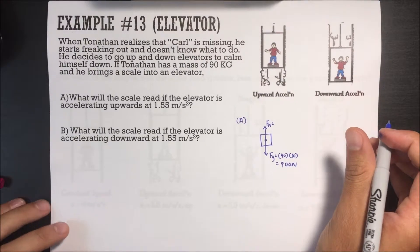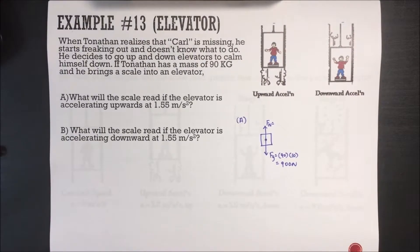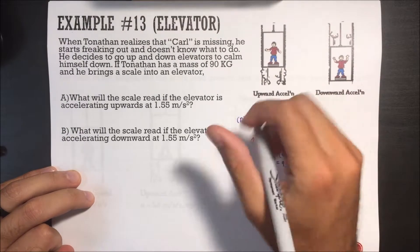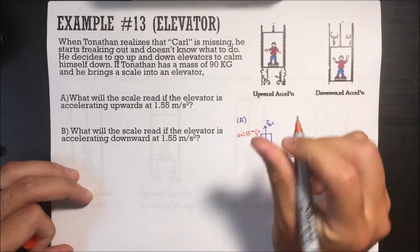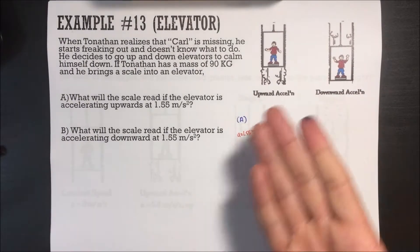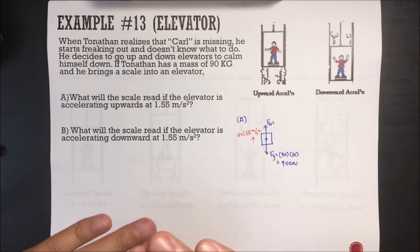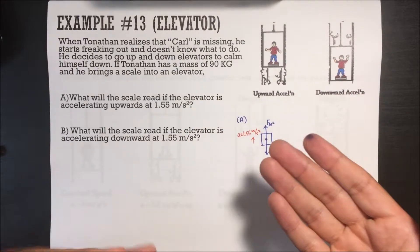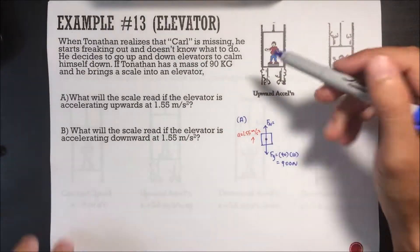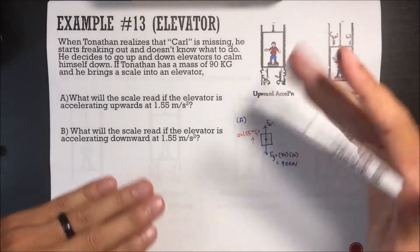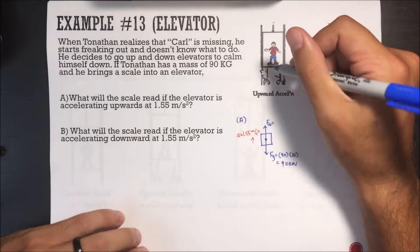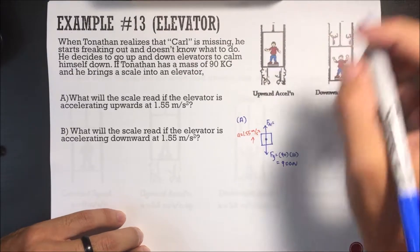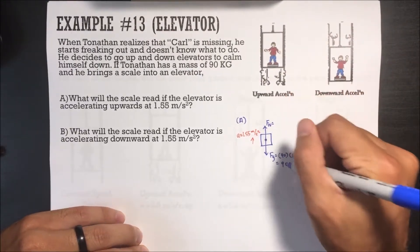What will the scale read if the elevator is accelerating upwards at 1.55 meters per second squared? In Scenario A, it's accelerating upwards at 1.55 m/s². If you're in an elevator and it starts to accelerate upwards, you feel a tiny bit heavier because there's more contact between you and the elevator — there's more of a squeeze. So the answer should be more than 900 newtons.